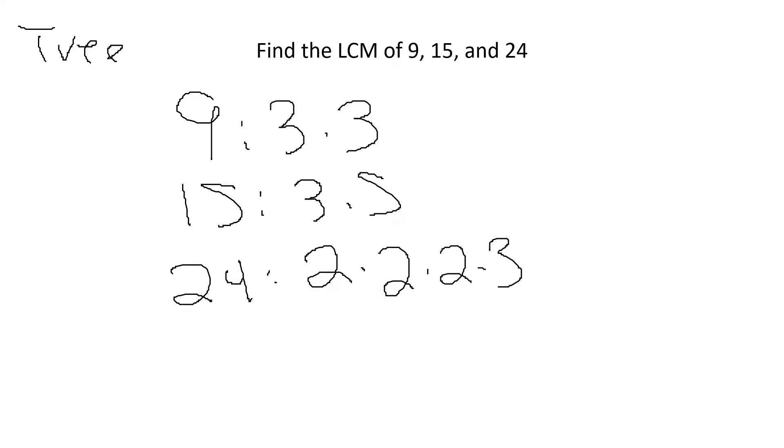So, for greatest common factor, after you tree it and list it, you have to find the most of each number. So, I have 3s, 2s, and 5s. I have 2 3s here. I have 1 3 here and 1 3 here. The most is 2. Now I have no 5s here. 1 5 here. No 5s here. So, the most 5s I have is 1. No 2s, no 2s, 3 2s. The most 2s I have is 3.